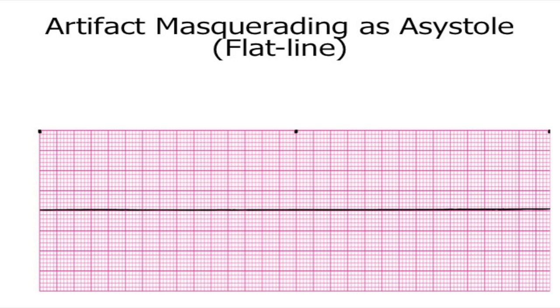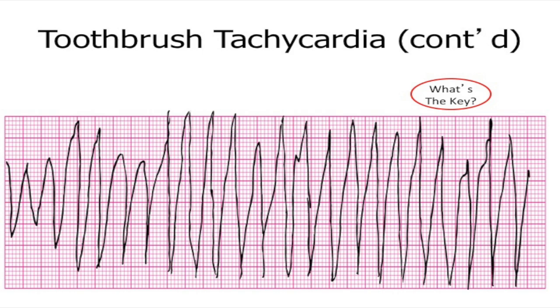Know that asystole can masquerade as artifact. The first step in anybody in cardiac arrest with asystole is confirming in two leads because you don't want to call someone asystole when maybe they're in VTAC or V-fib where we can actually do defibrillation and possibly bring them back to life.